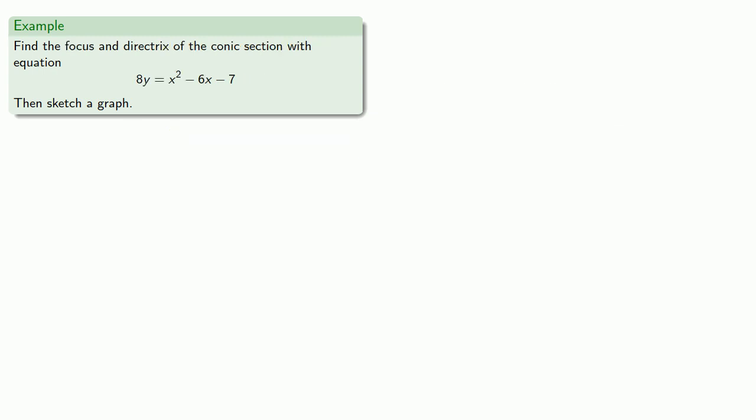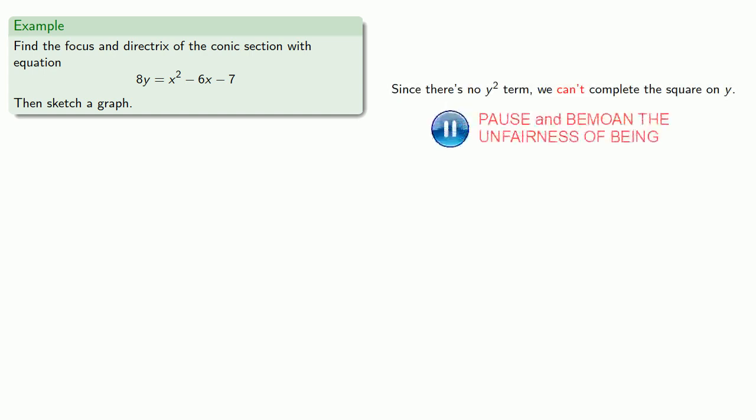Let's find the focus and directrix of the conic section with equation 8y = x² - 6x - 7, and sketch the graph. Since there's no y² term, we can't complete the square on y. But we can still complete the square on x. Completing the square on x, it's probably easiest if we declutter the x terms and get rid of this constant.